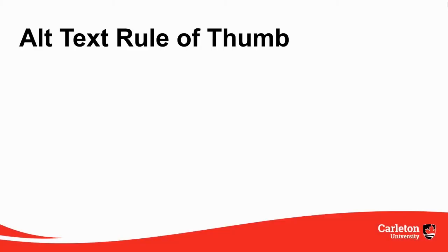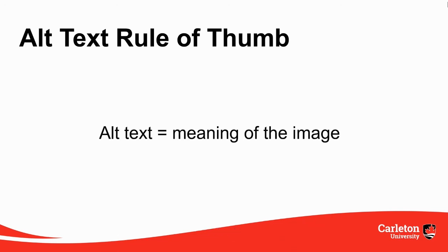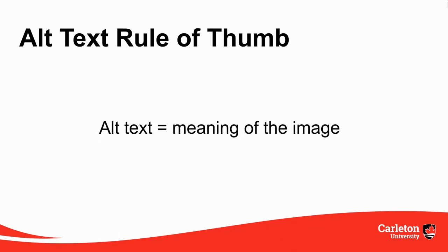While these different examples might make it seem like there are a lot of rules, they all stem from a rule of thumb: alt text should convey the meaning and purpose of an image. This should be reflected in whether or not alt text is included, as well as what is written in the alt text or in the surrounding body text, including for linked images and images with text.